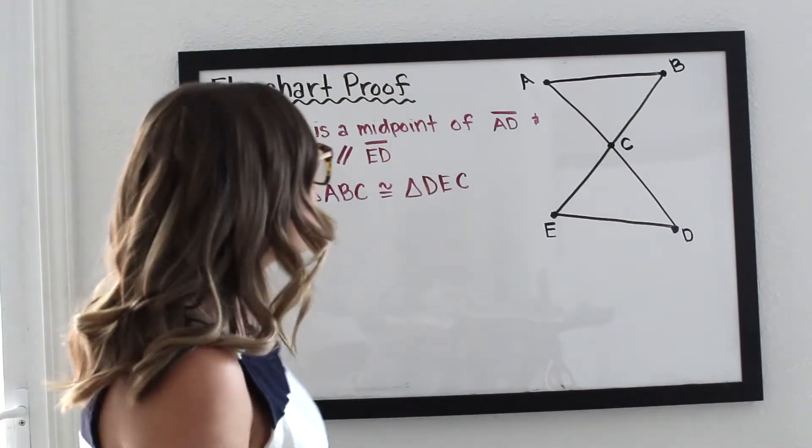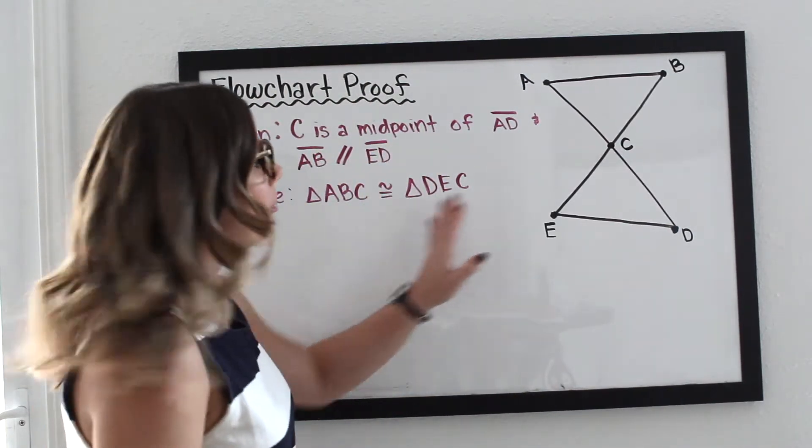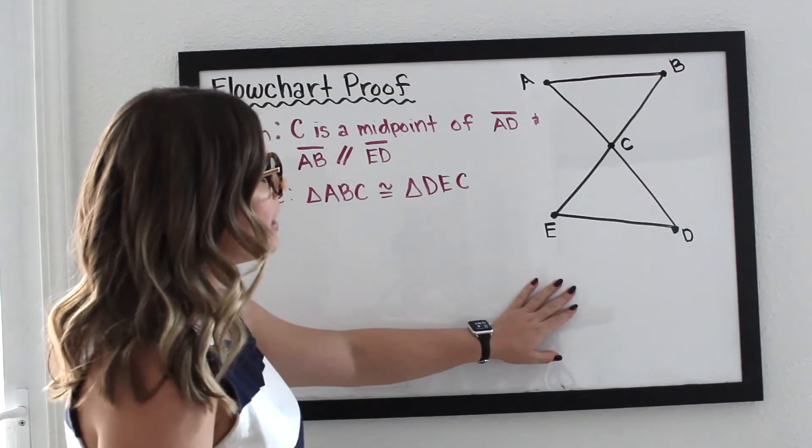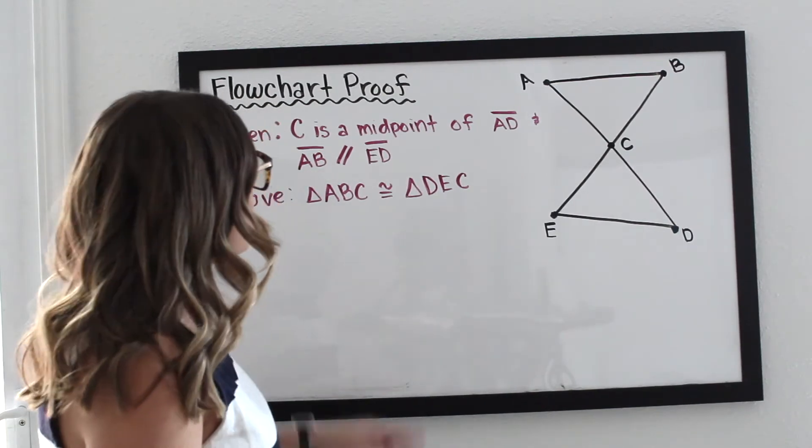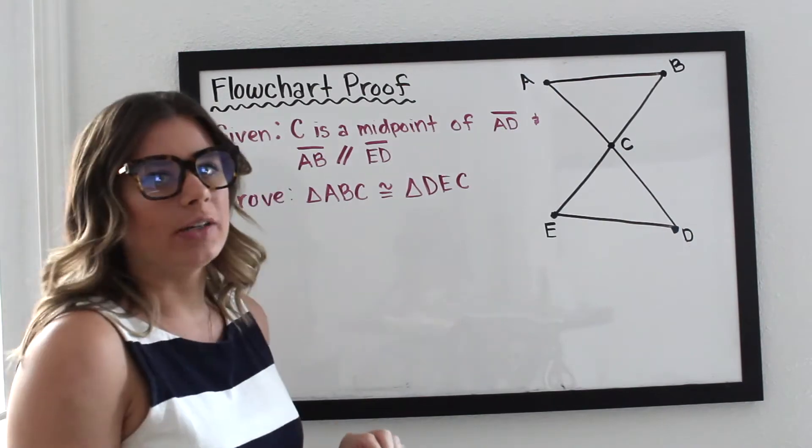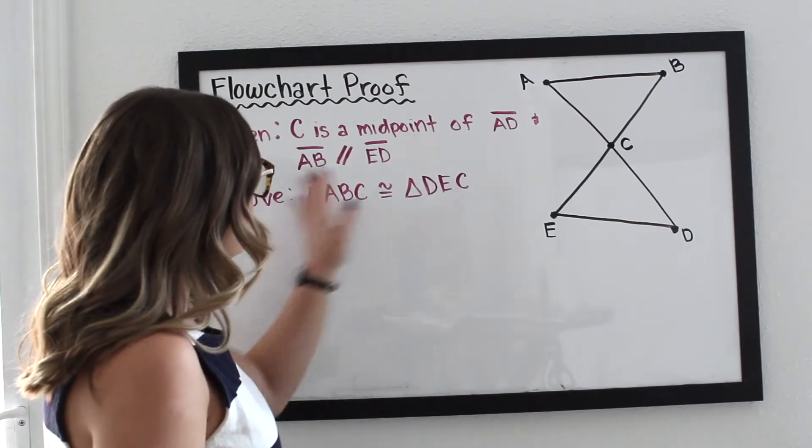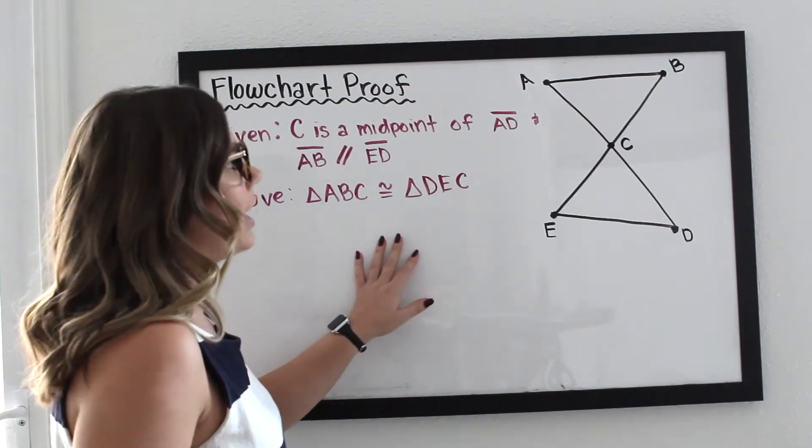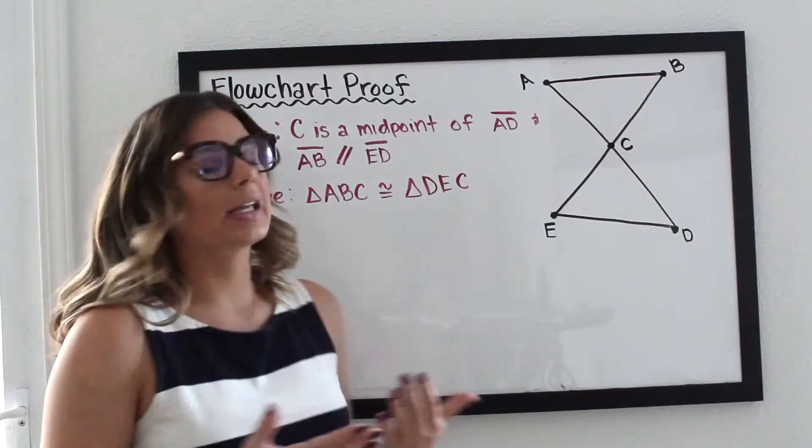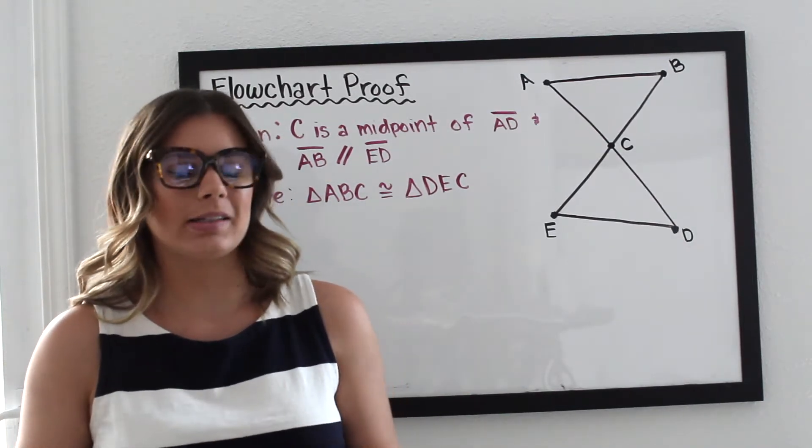So we're going to go through this example. We have triangle ABC and triangle DEC, and we're given some information. Now we need to prove that the triangles are in fact congruent. So here is my step-by-step thought process.